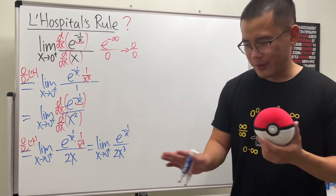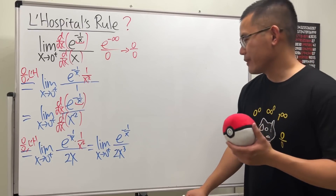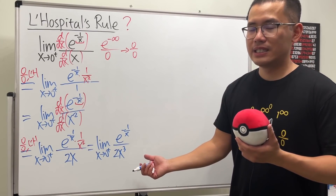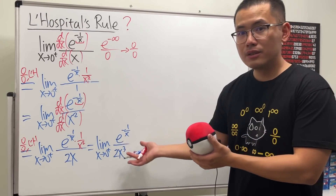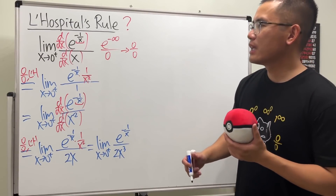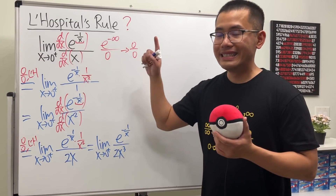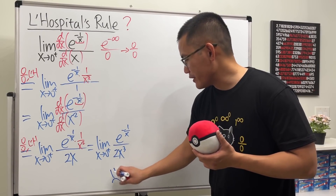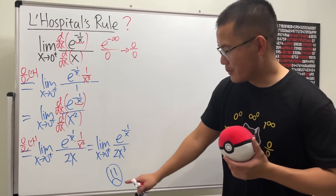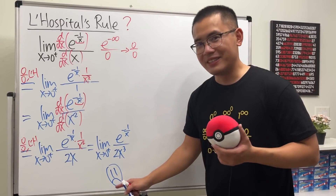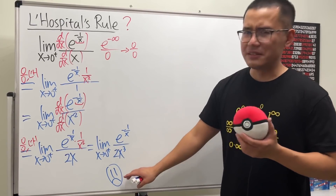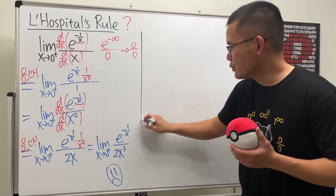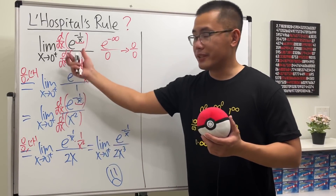Should we keep going? No. We did L'Hôpital's rule twice and the denominator grew while the top stayed the same. This means we cannot use L'Hôpital's rule this way. I just want to demonstrate that L'Hôpital's rule does not work if you do it this way.